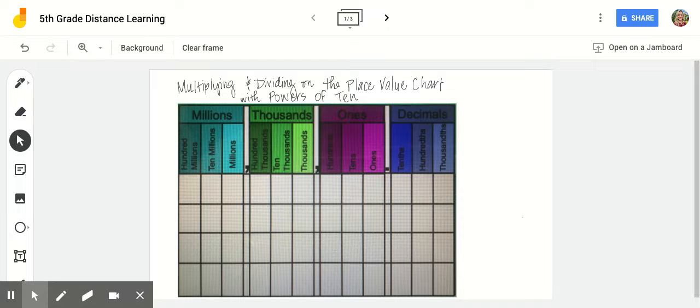In the last video, we looked at the pattern that every time you move one place to the left, the place value increases by 10 times the amount. And if you move twice to the left, it increases by 10 times 10 the amount, otherwise known as 100, and so on. The pattern continues.